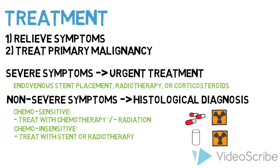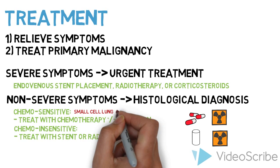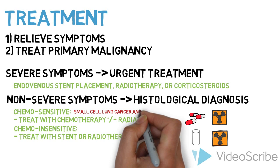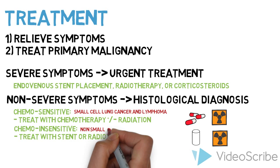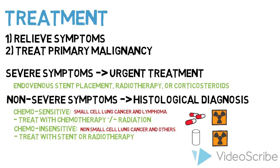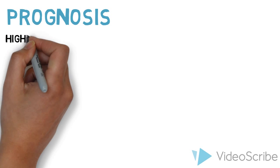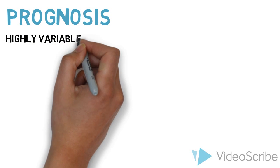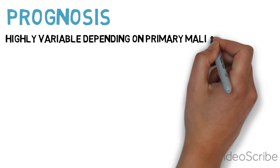In general, chemotherapy is best for small cell lung cancers and lymphoma, while radiotherapy is best for non-small cell lung cancers and others. In rare circumstances, if symptoms persist, surgical intervention may be considered. The patient prognosis of malignancy-related superior vena cava syndrome is highly variable depending on the primary malignancy implicated.